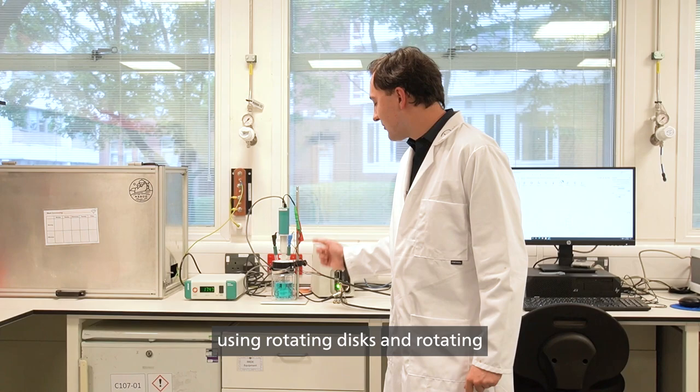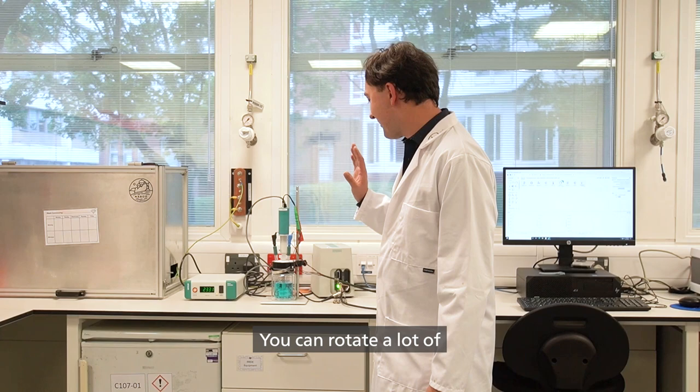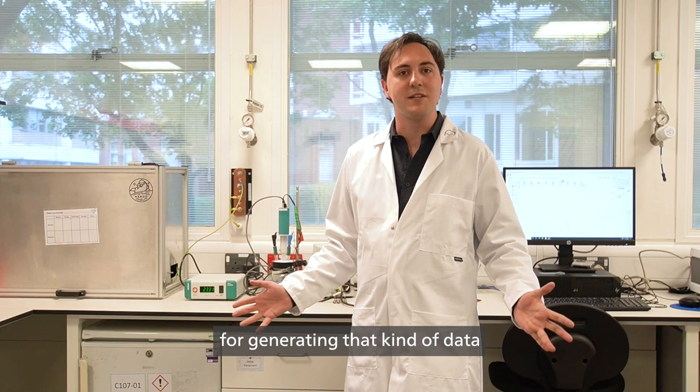I do energy research using rotating discs and rotating ring disc electrodes. The Autolab rotating disc electrode is excellent due to having the mercury contacts at the top. It's dead silent, it can rotate at a lot of rotation speeds, which is particularly useful for generating that kind of data without noise from mechanical motion.